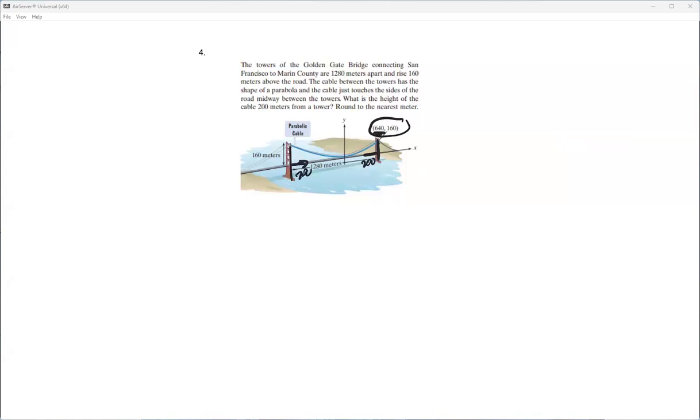So this is 640, right? This whole thing is 1,280. So you notice that 640 is half of 1,280. And so what would this point right here be? Right here. It would be negative 640, 160, right? So what does that mean about this point right here? It's 0, 0.